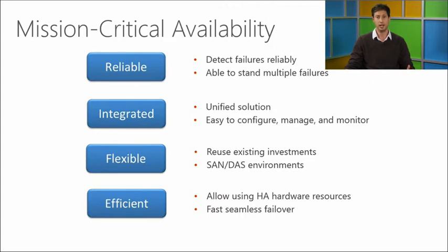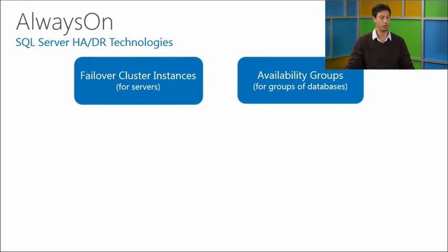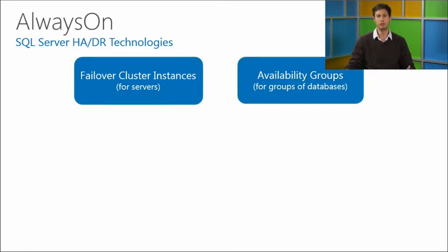Finally, we wanted the solution to be efficient. Many customers are spending significant amounts of money on high availability hardware, having multiple secondary replicas. We wanted those replicas to be used for something beyond just waiting for a failover. We also wanted minimal time from failure detection to when an application can reconnect, without needing to change any reconnection logic. In SQL Server 2012, we introduced the term Always On to refer to the set of HA and DR technologies. We have two technologies: Failover Cluster Instances and Availability Groups.